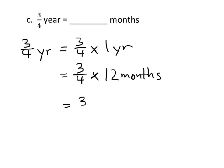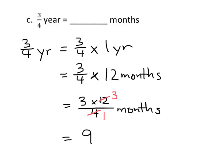So now we have three-fourths times twelve months. We know how to do that — that's going to be three times twelve over four months. We know that twelve and four are both divisible by four, so twelve divided by four is three, and four divided by four is one. That gives us nine months.